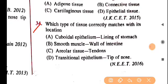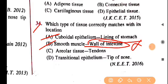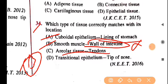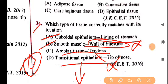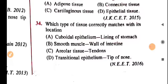Question 34: which type of tissue correctly matches with its location? Cuboidal epithelium lining the stomach is wrong. Smooth muscles in the wall of intestine is correct — the intestine wall is made of smooth muscle fibers. Transitional epithelium at the tip of the nose is wrong — hyaline cartilage is there. So the answer for question 34 is option B.